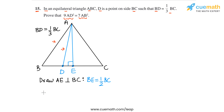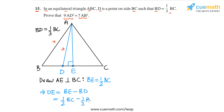Now we can write DE in terms of BC. DE equals BE minus BD. BE is one-half of BC and BD is one-third of BC, so one-half minus one-third of BC gives us one-sixth of BC. So DE equals one-sixth of BC.